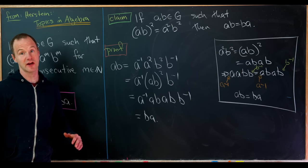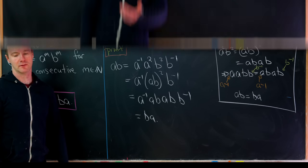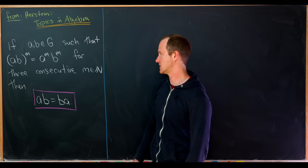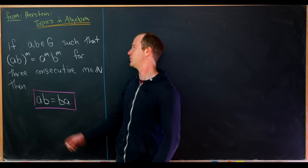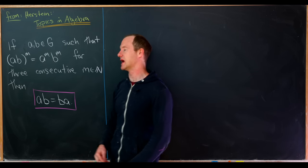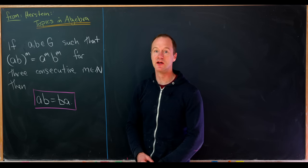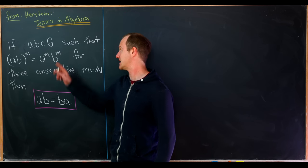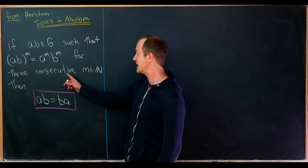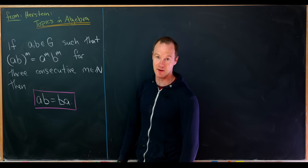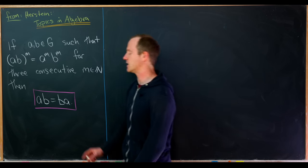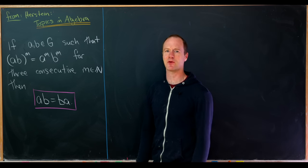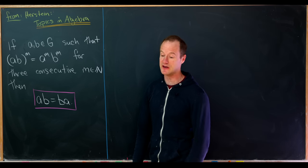Now that we're warmed up, let's look at our main result. If a and b are elements of a group such that (ab)^m equals a^m times b^m for three consecutive natural numbers m, then ab equals ba. So if the identity holds for three values in a row, it must hold — and I think that's a pretty nice result.